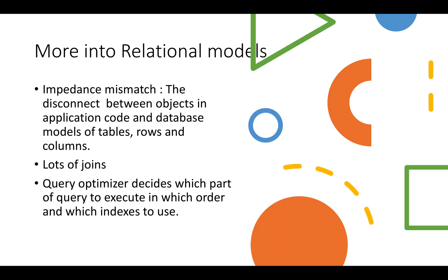Let's deep dive into relational models more. Our application generally uses object-oriented programming languages for coding and we have to generally write a translation layer to map the objects in the application layer to the models in the databases, and that disconnect between the objects in application code and database models is called impedance mismatch which can be a disadvantage in relational models. Relational models also allow us to have a lot of joins to find out even a little bit of information. In relational model, it's the query optimizer which decides which part of the query to execute and in which order and which indexes to use and which join methods to use.